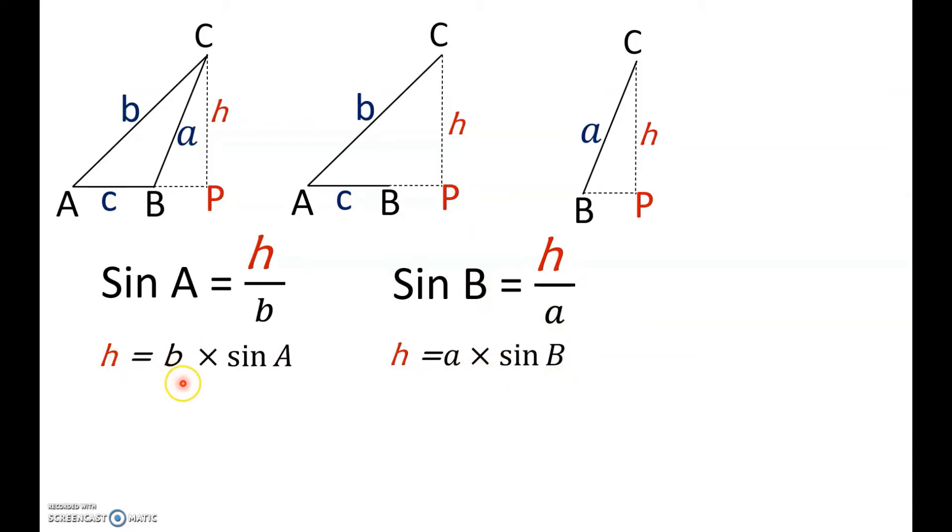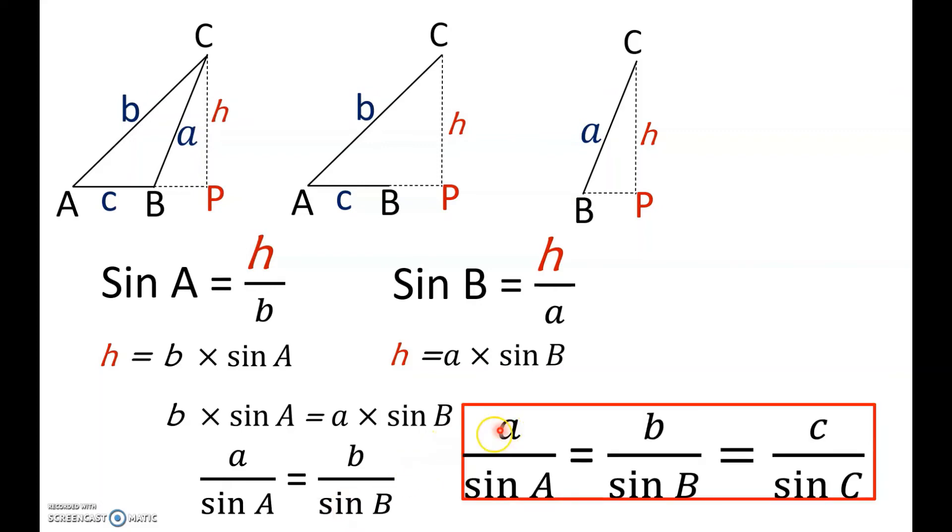Now, equating these two because they're both equal to H, we can say B times sine A is equal to A times sine B. Now, let's bring sine A down here and sine B down here. So, we can say that A by sine A is equal to B by sine B. Extending this further to the other side, we can say that A by sine A is equal to B by sine B is equal to C by sine C.